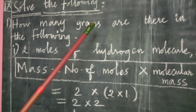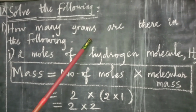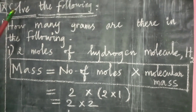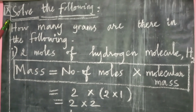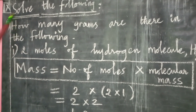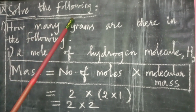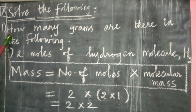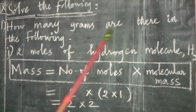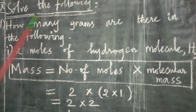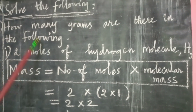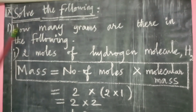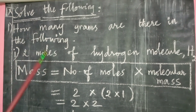Good morning students. In the atoms and molecules lesson, we come to the last exercise, letter 9 — solve the following. The first question asks: how many grams are there in the following? How many grams means you have to find the mass.